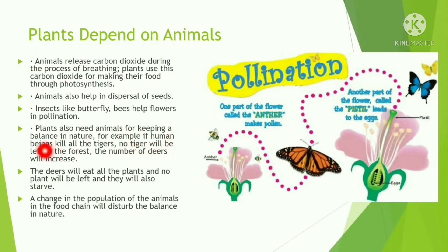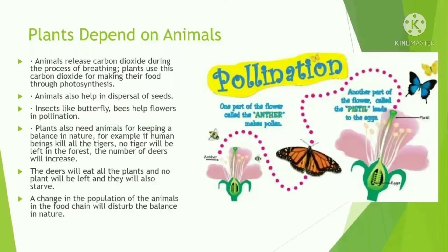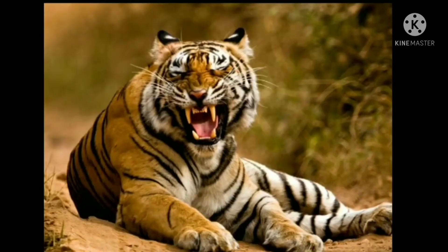Plants also need animals to keep a balance in nature. For example, if human beings kill all tigers, the number of deer will increase in the absence of their predator. The deer will eat all the plants and eventually no plants will be left. A change in the population of any animal in the food chain will disturb the overall balance in nature, which is why we must protect even dangerous animals like tigers in wildlife sanctuaries and national parks.